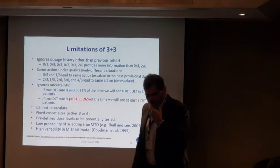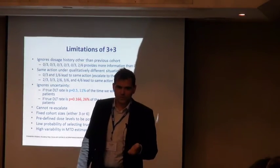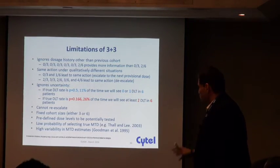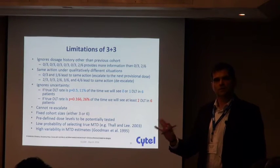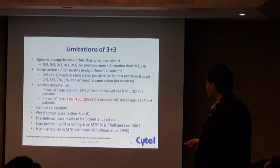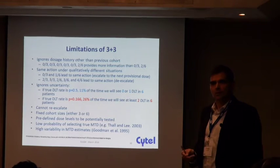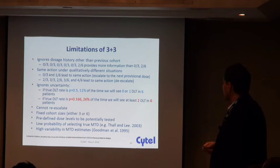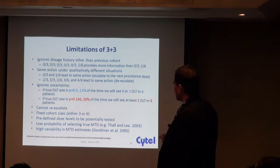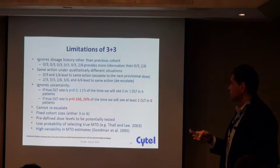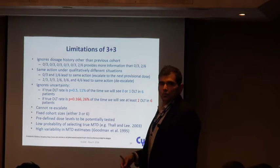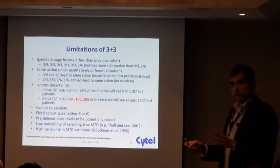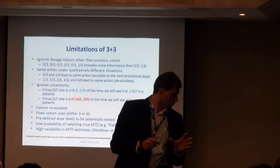Along with all the presentations at conferences like the SMI conference, there is usually one that will criticize the 3+3 design — that would be the standard one. Here's a compilation of the different criticisms: for example, it ignores dose history other than the previous cohort, so you're only basing your conclusions on what happened in the last cohort and not utilizing all available data.